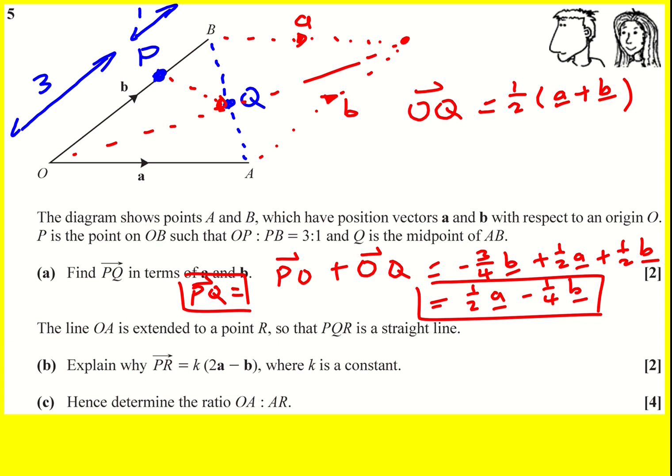I'm then told that the line OA is extended to a point R so that PQR is a straight line. So there we go, this is going to be point R here. Explain why PR is equal to k(2a - b), where k is a constant.